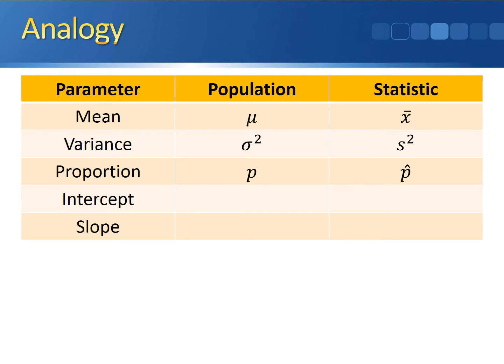For proportions, p represented our population proportion and p-hat represented our sample proportion. We have a very similar relationship with the regression line.